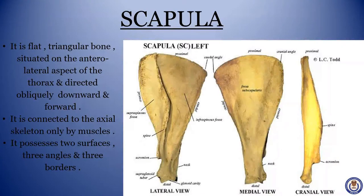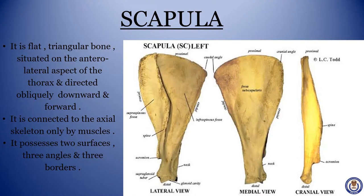Scapula. It is a flat, triangular bone situated on the anterior lateral aspect of the thorax, directed obliquely downward and forward. It is connected to the axial skeleton only by muscles. It possesses two surfaces, three angles and three borders.